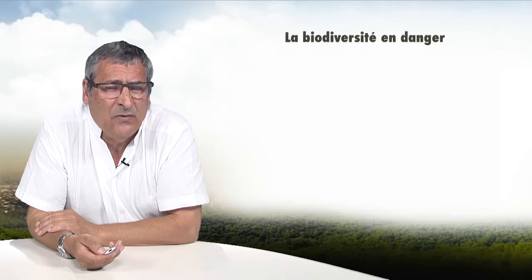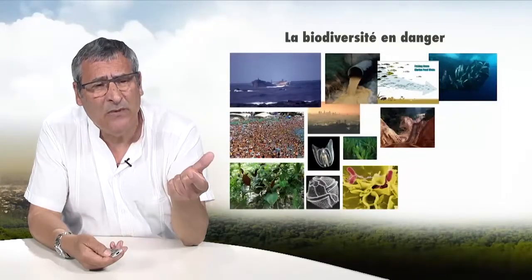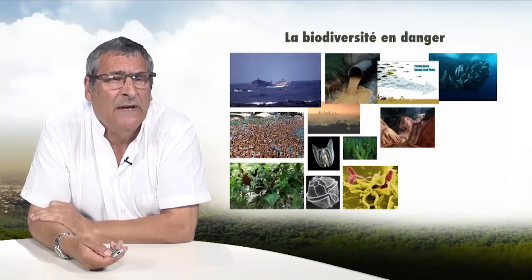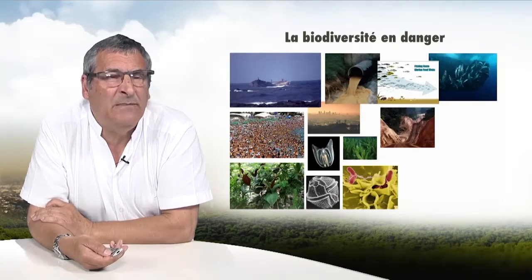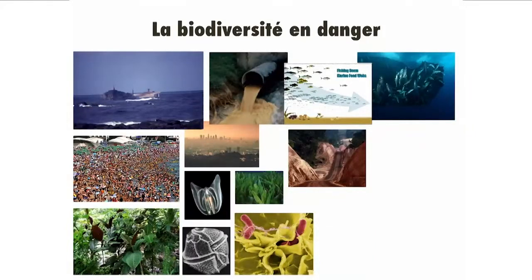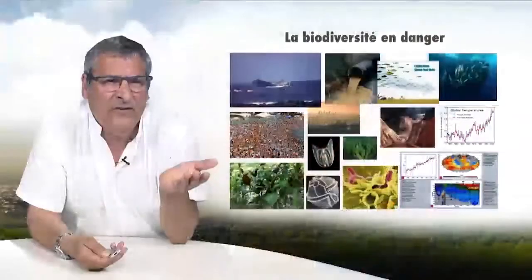Biodiversity today is under threat because of destruction of ecosystems, pervasive pollution, over-exploitation of resources, and the dissemination of invasive species everywhere. This is the dinoflagellate traveling all over the world — it can produce a toxin that kills a human in 20 minutes, called Alexandrium. And here, microalgae in the Black Sea which have destroyed the fish stock. And finally, the climate is changing, superimposed on what we're continuing to do: destroy, pollute, disseminate, and over-exploit.